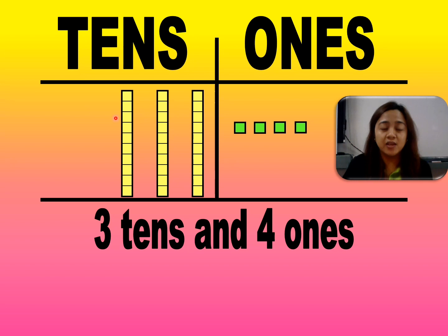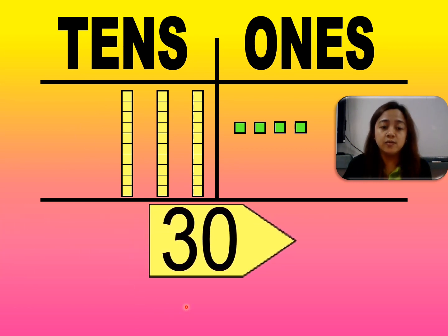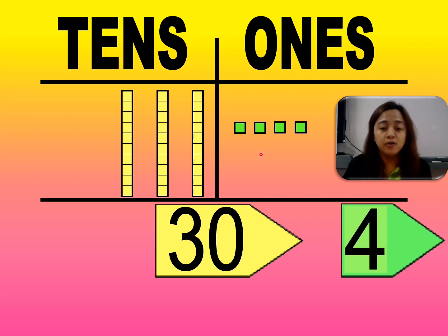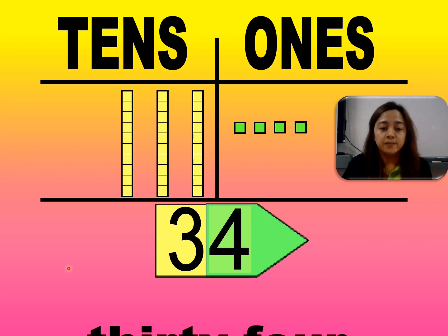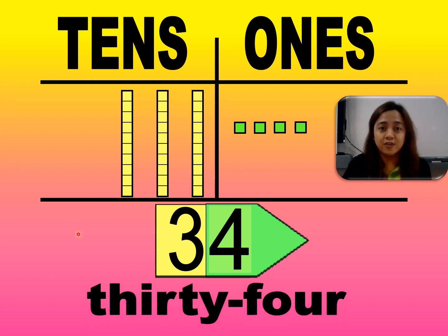Let's see what is the equivalent of three tens. So we have here tens — three tens is equal to thirty. Four ones is equal to four. Thirty-four.